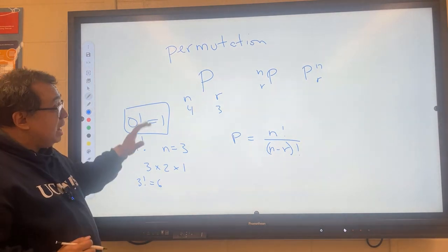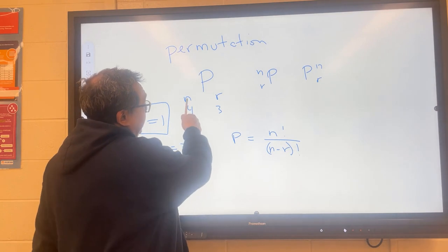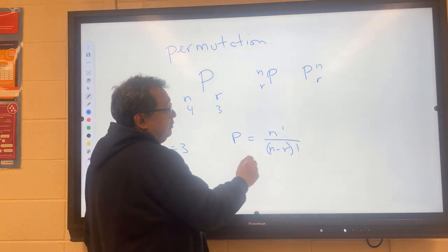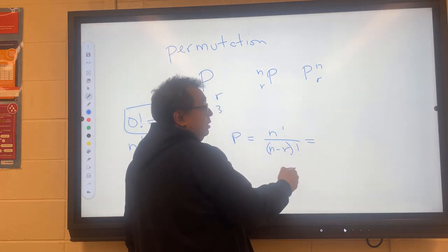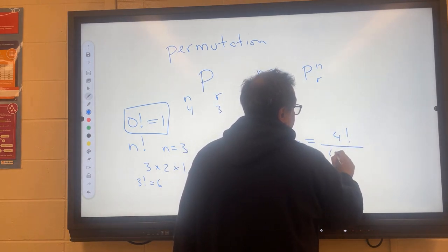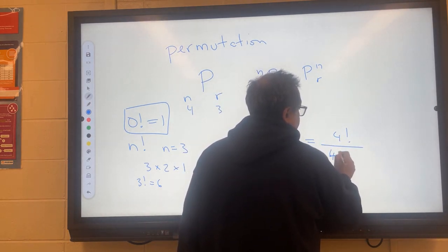Now, getting back to our problem with the four horses, in that example, n was equal to 4 and r was equal to 3. So if I put those numbers in here, I would get 4 factorial over 4 minus 3 factorial,